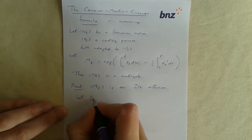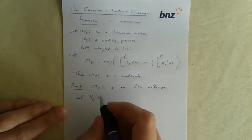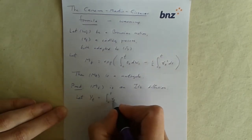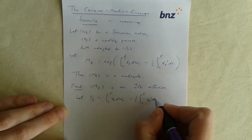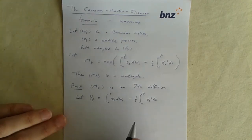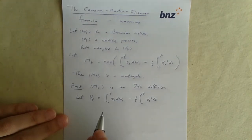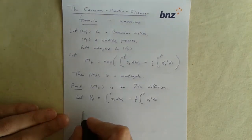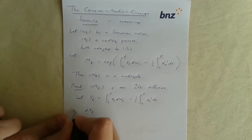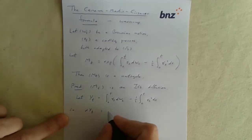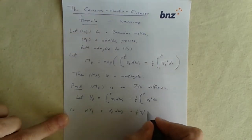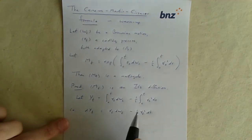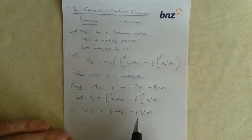First we let Y_t be the thing that goes inside — just that part. That's an Itô diffusion, and we can immediately see its drift and speed by writing it in differential form: dY_t = gamma_t dW_t minus one-half gamma_t squared dt. Therefore its drift is minus one-half gamma_t squared and its speed is gamma_t.